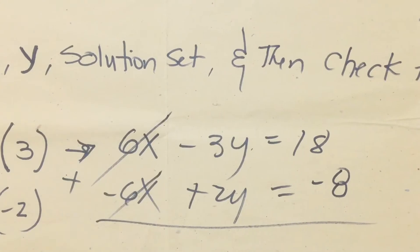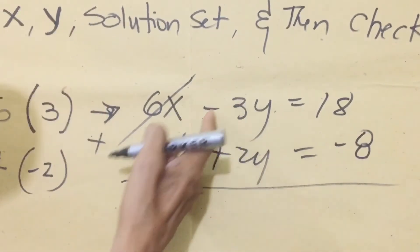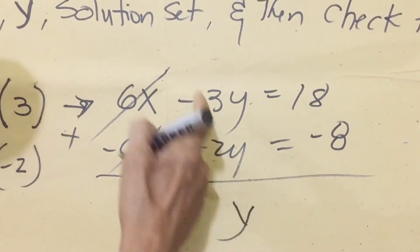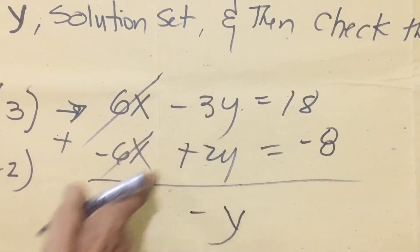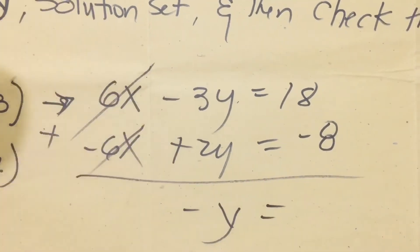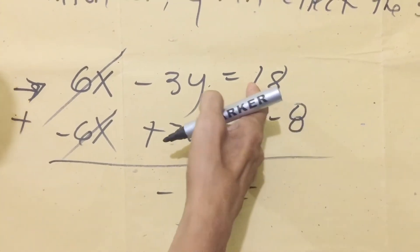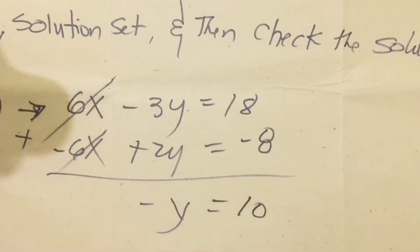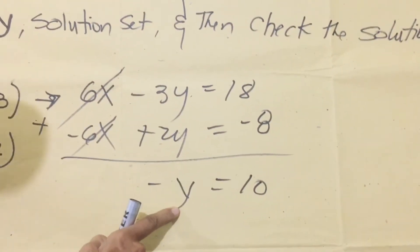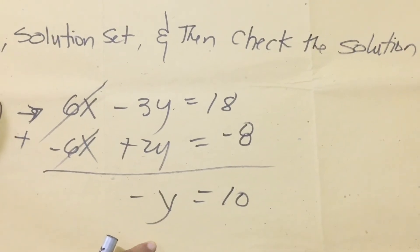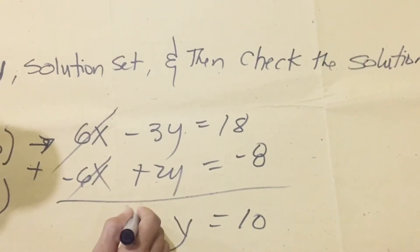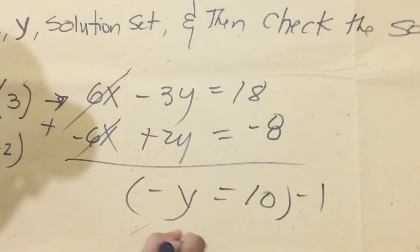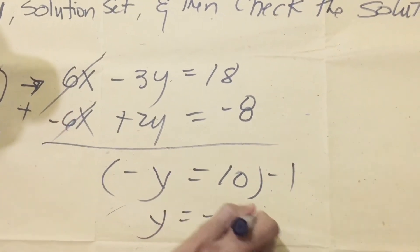The purpose is to eliminate the variable x. We have negative 3y plus positive 2y, which gives us negative y. The result is negative y because the negative side is larger. Since the result should be positive y, we multiply by negative 1, giving us positive y equals negative 10. Therefore, the value of y is negative 10.